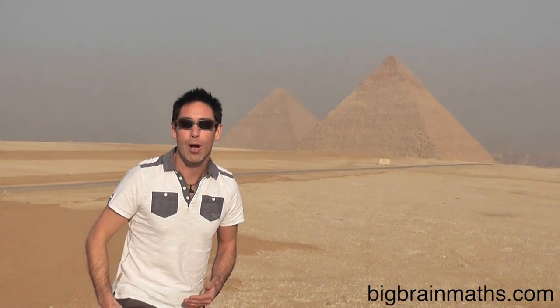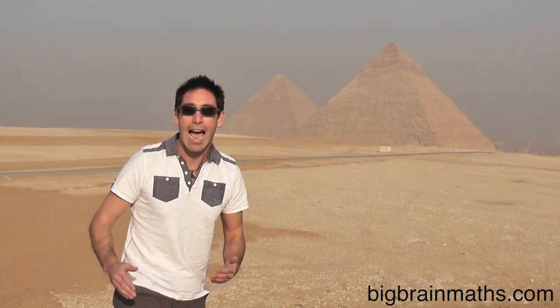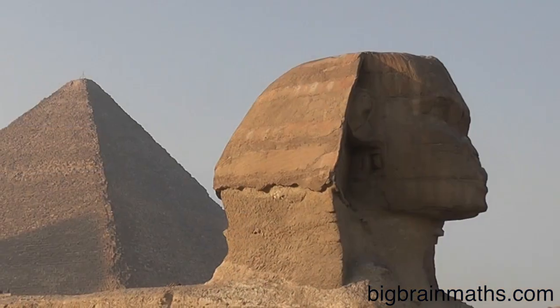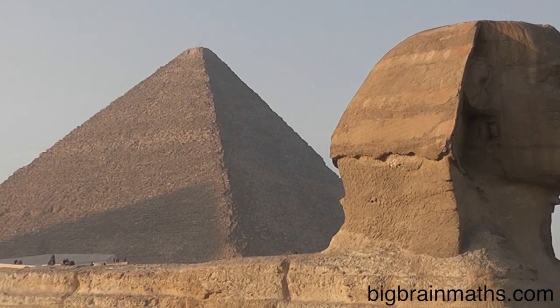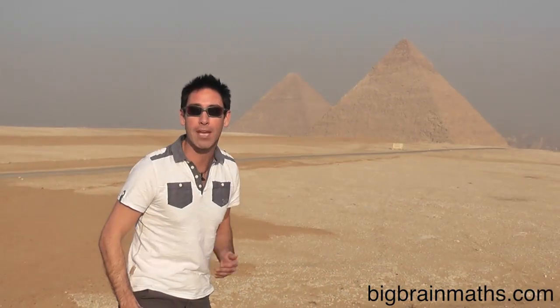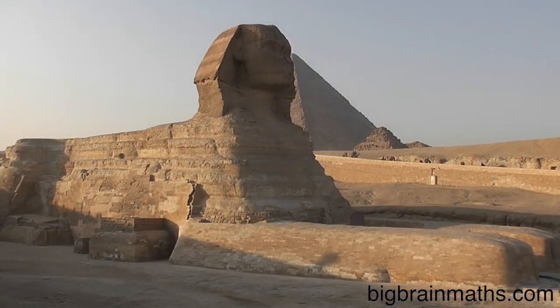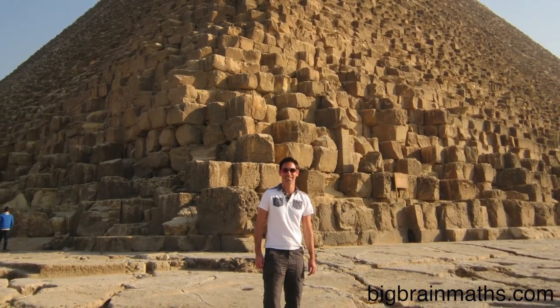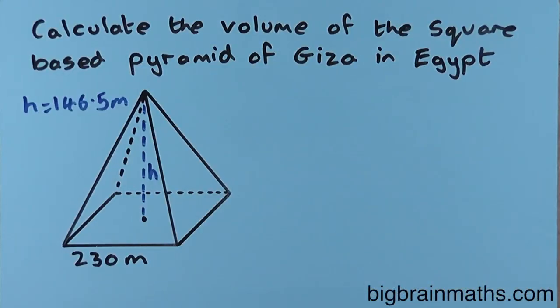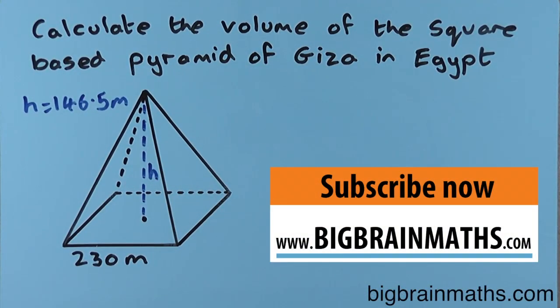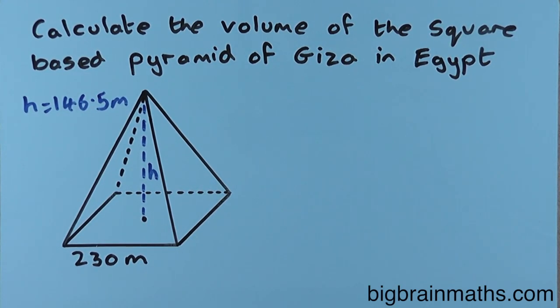The Great Pyramids of Egypt were built about 5,000 years ago and they're all square-based pyramids. The largest one, which is the Great Pyramid of Giza, is the furthest one behind me, and the base of the pyramid is 230 meters. In this question, we're going to calculate the volume of the square-based pyramid of Giza.